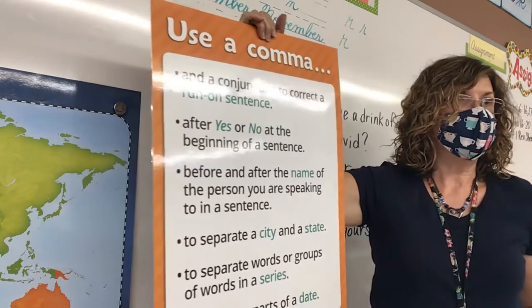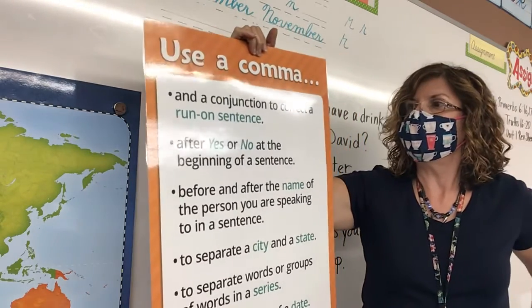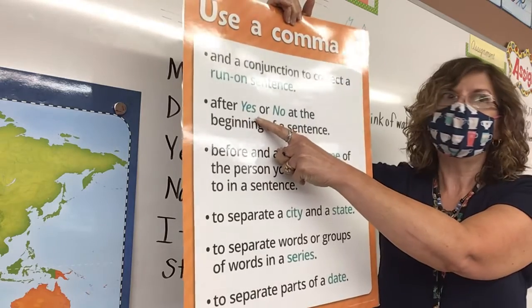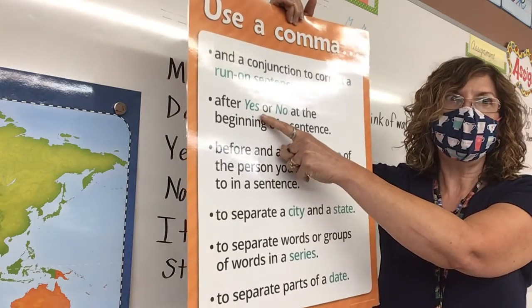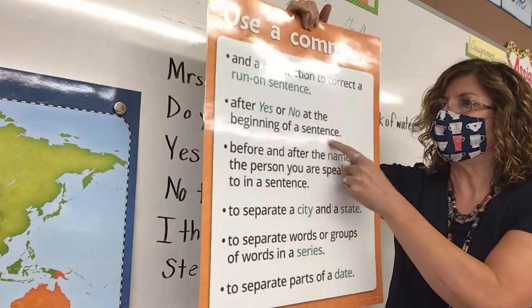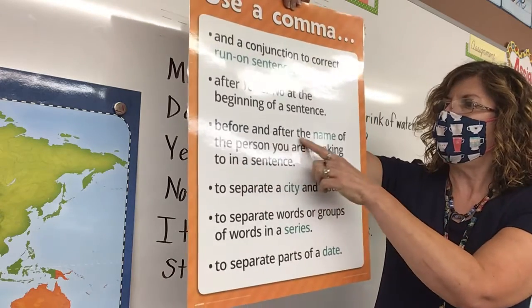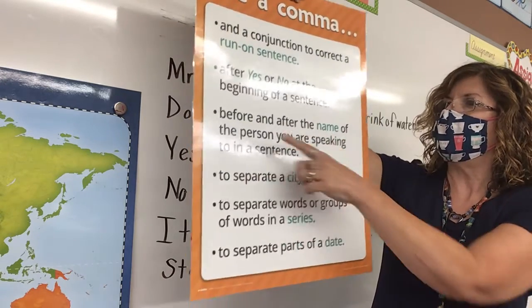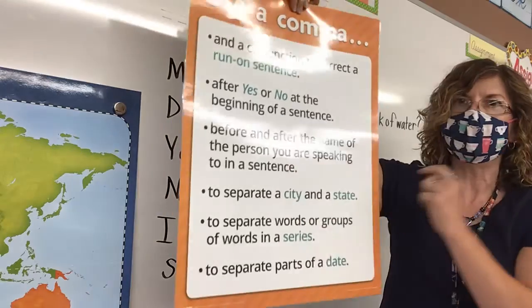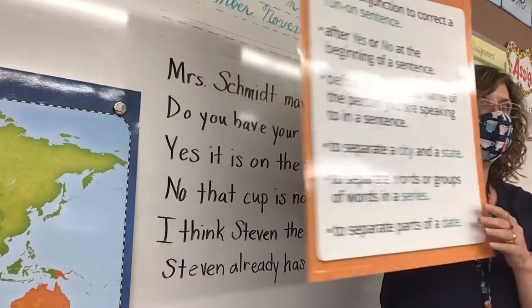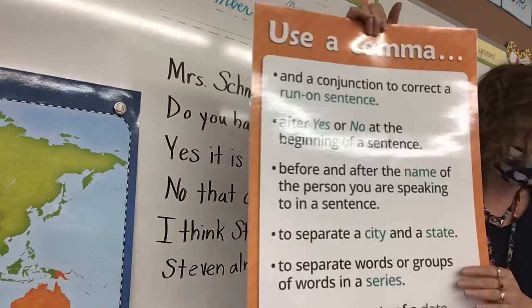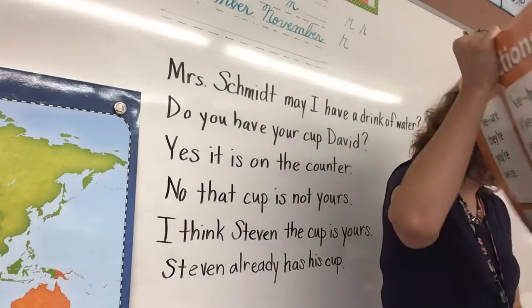We learned that when we were learning our own sentences. But then we learned two new rules yesterday. One of them was after everybody's part — yes or no. And remember, I called that direct address when you're talking to somebody, not when you're talking about them.